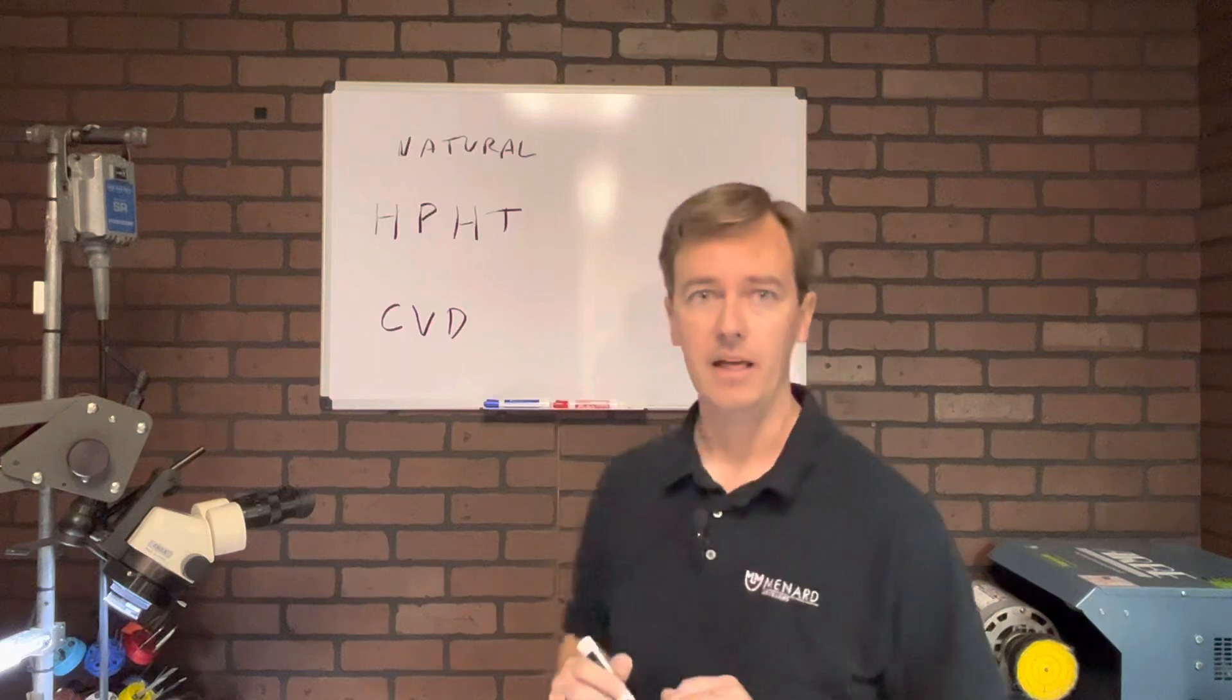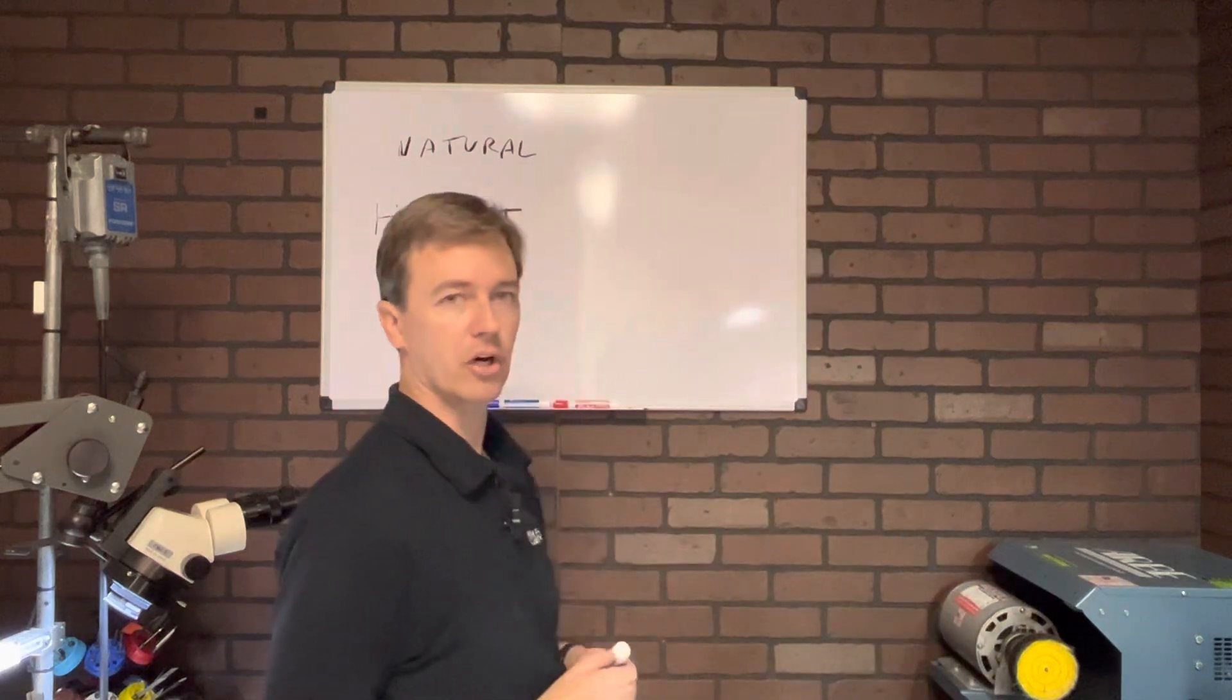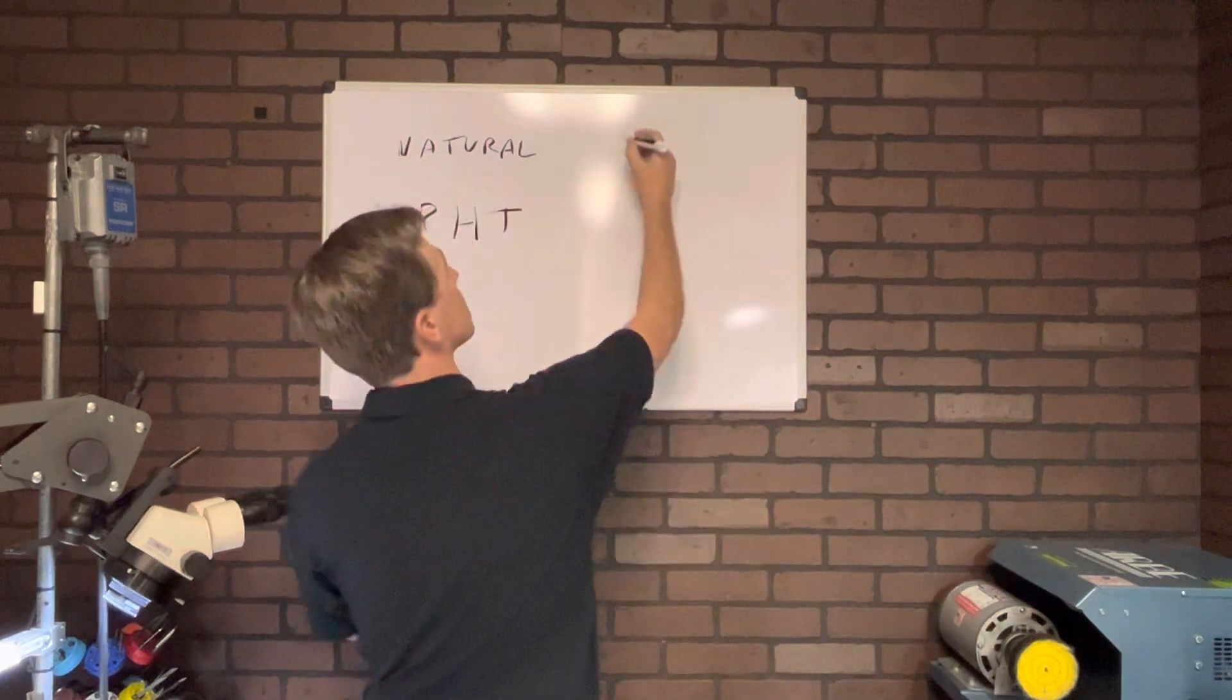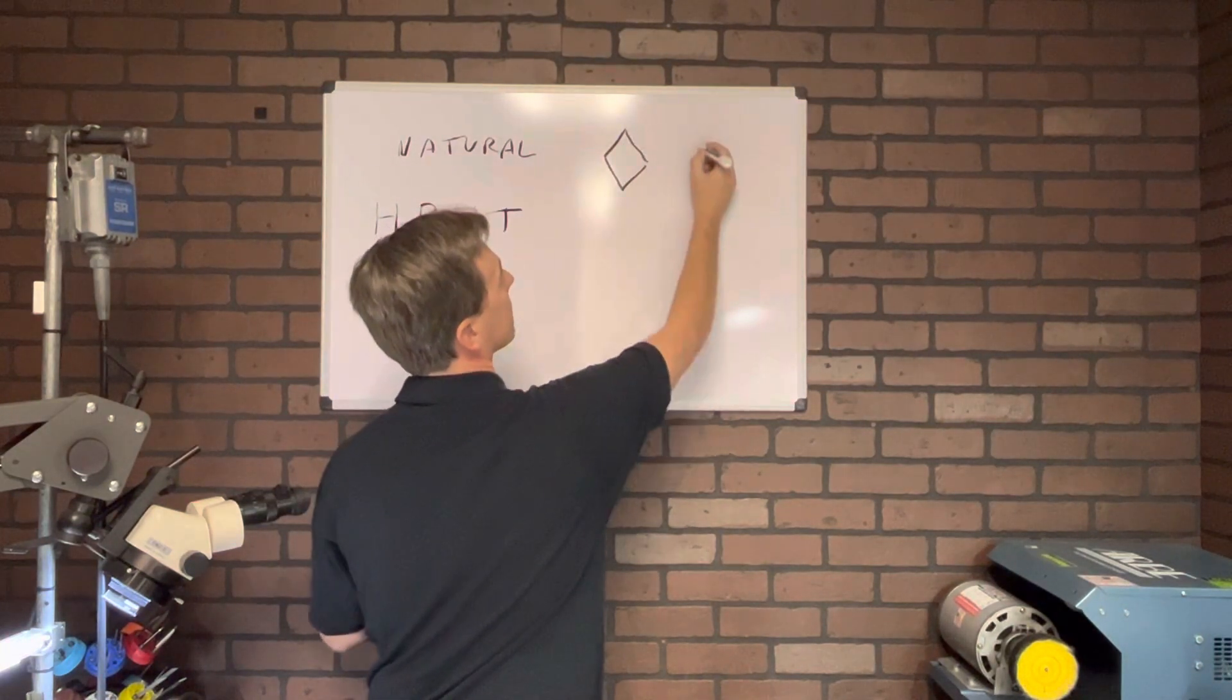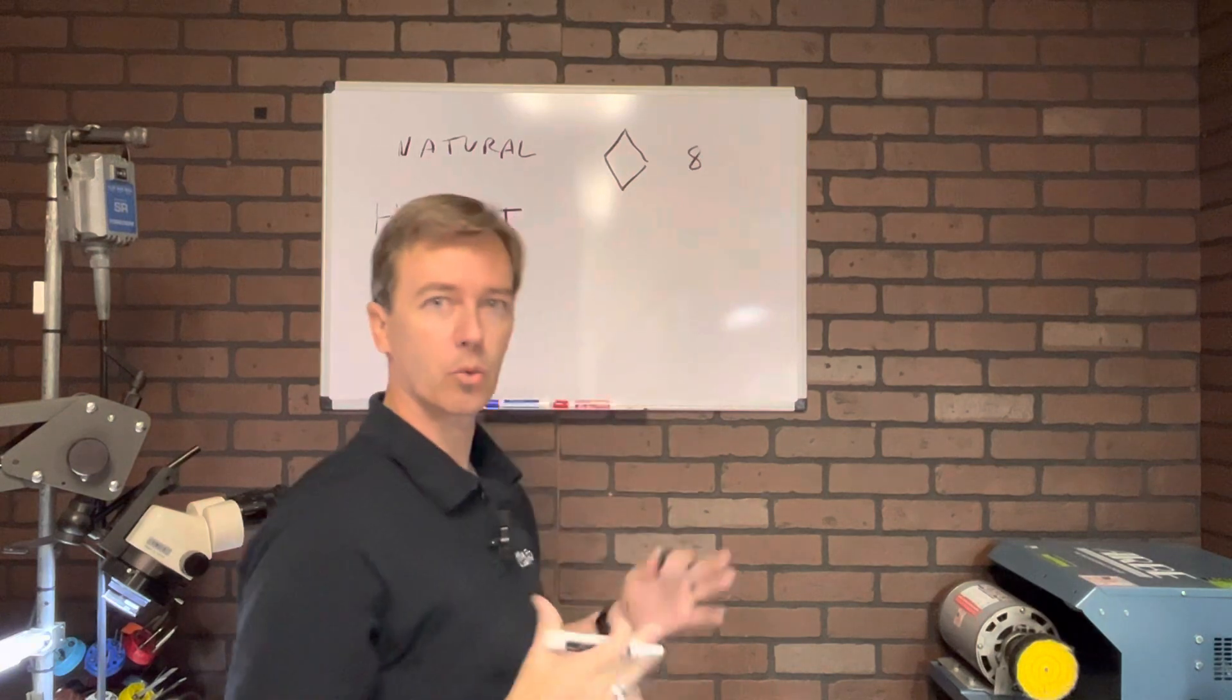So the difference comes down to their crystal structure. So the crystal structure of a natural diamond is going to be somewhat like an eight-sided diamond. That's the way the crystal grows.